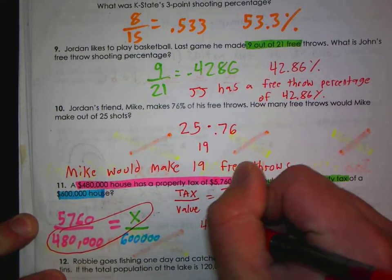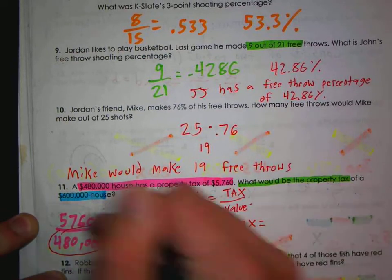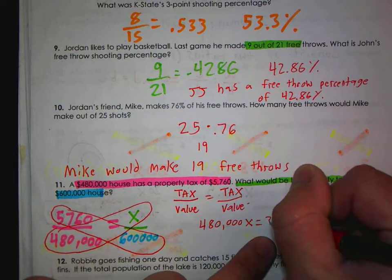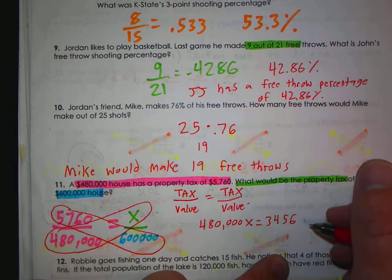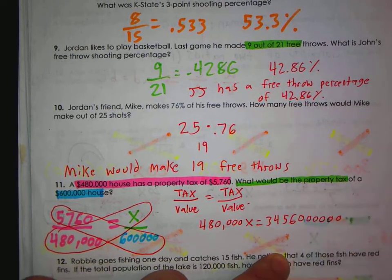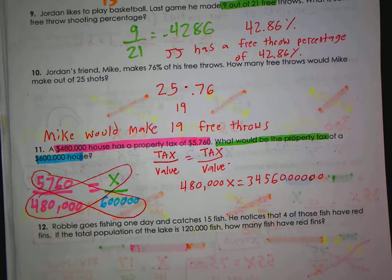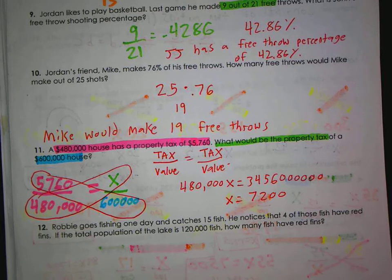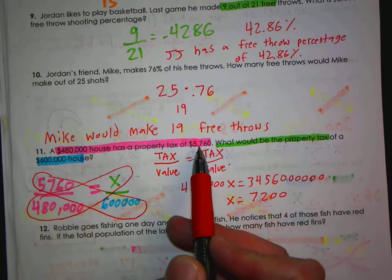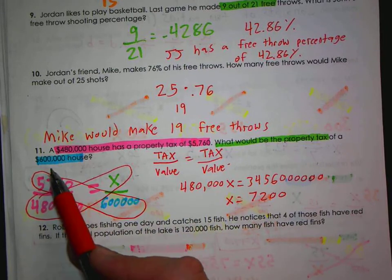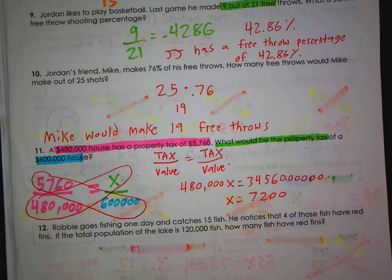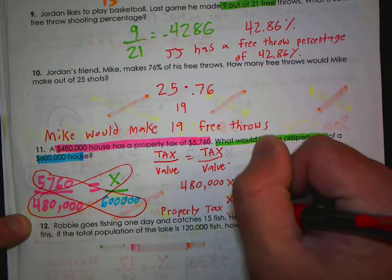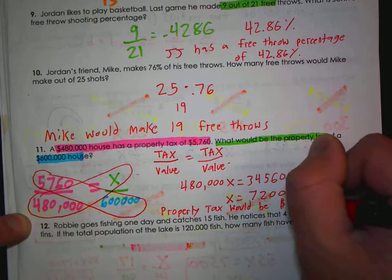That would be $480,000 times X, and then $5,760 times $600,000. Wow, that is 3, 4, 5, 6, and then six zeros. Divide both sides by $480,000 and you get $7,200. That sounds about right to me. If this guy in pink pays around $5,000 or $6,000, and this house is worth $120,000 more, it's expected to be around $7,000. That makes reasonable sense to me. So the property tax would be $7,200.